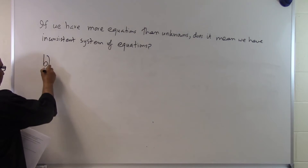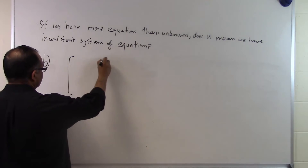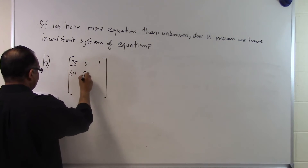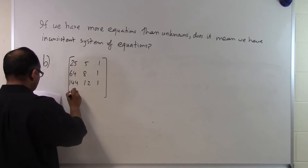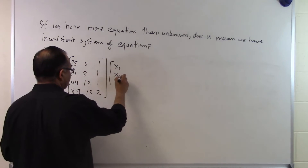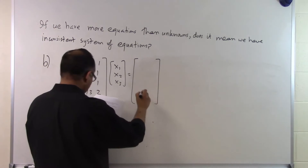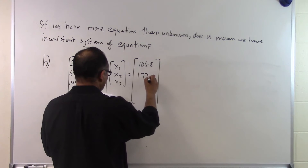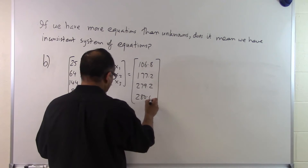Let's look at another example. Somebody gives me a set of equations with the same coefficient matrix — 25, 5, 1 / 64, 8, 1 / 144, 12, 1 / 89, 13, 2 — and unknown vector x1, x2, x3, but now the right-hand side is 106.8, 177.2, 279.2, and 280.0.